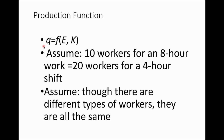This is the production function for our firm. Q is the quantity of output produced. It is a function of E for employment or workers, and K for capital. In the case of a short run production process, we assume that capital is constant. But in the long run, we assume that both inputs are variable inputs.